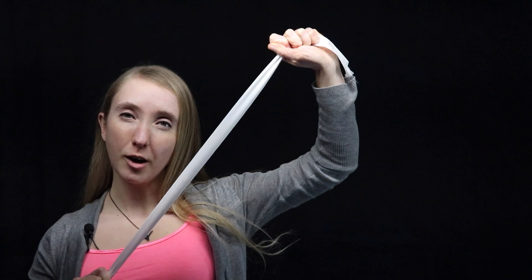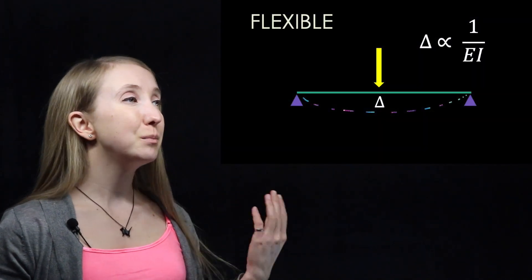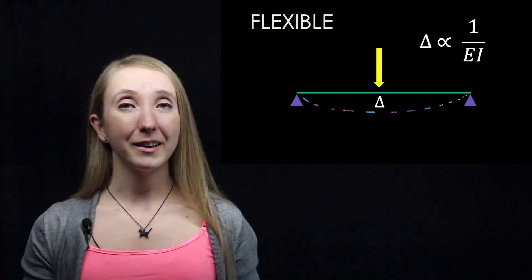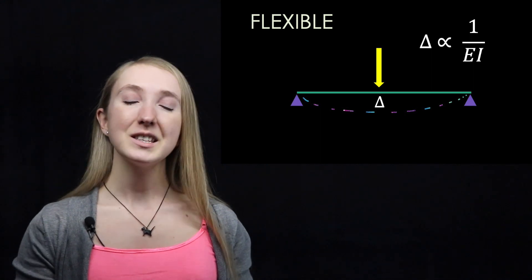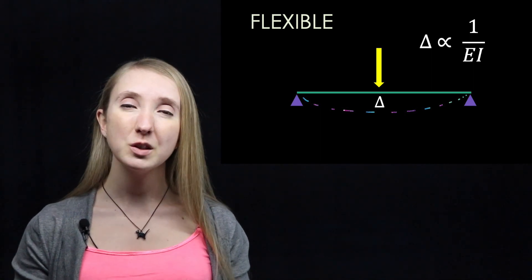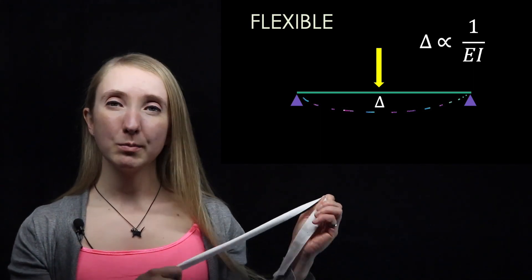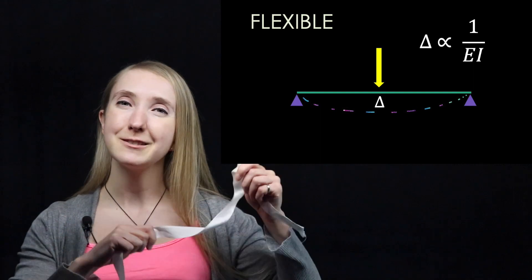Our next assumption is that the cables are flexible — they're like this ribbon. Under bending, they're floppy, but under tension, they're strong. You may remember from statics that if you have a beam under load, it will deflect more the smaller your I value is. The I is a property of the area of your section. We're basically assuming that the I of our cables is so small that there's no bending resistance left.